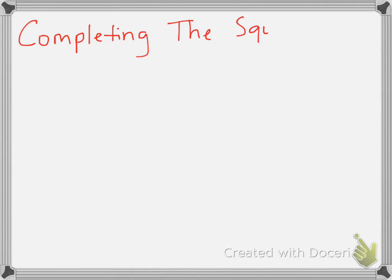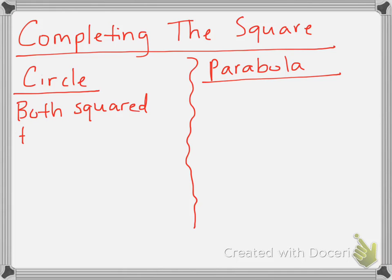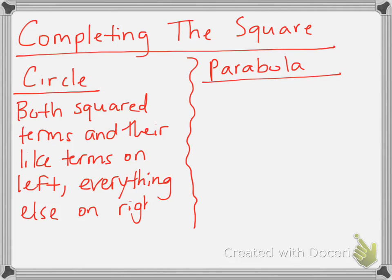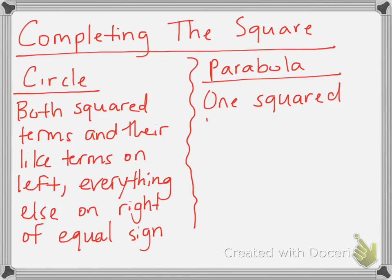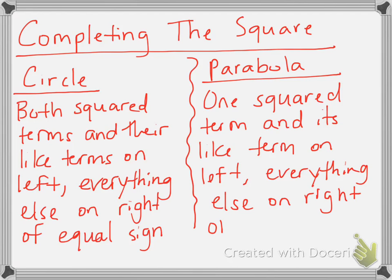Completing the square is pretty simple. First, determine whether you're completing the square for a circle or a parabola. For a circle, you'll have two squared terms, and you want both on the left side — take the squared terms and their like terms on the left, and move everything else to the right. For a parabola, only one squared term is available, so you want that term and its like term on the left, and everything else on the right. Remember, when you move something to the other side of the equal sign, the signs have to change.